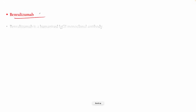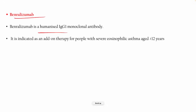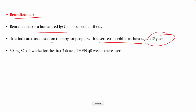Benralizumab is also a humanized IgG1 monoclonal antibody, used as add-on therapy for people with severe eosinophilic asthma aged 12 and above. The dose is 30 mg subcutaneous every 4 weeks for the first 3 doses, then every 8 weeks thereafter.